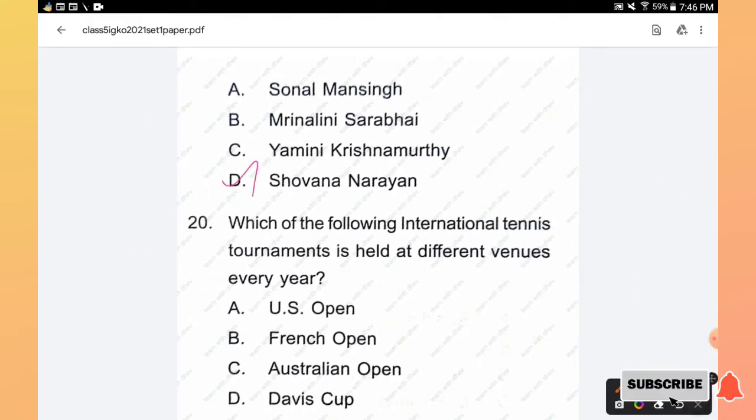Question number 20: Which of the following international tennis tournaments is held at different venues every year? US Open, French Open, Australian Open, Davis Cup. The right answer is option D, Davis Cup.